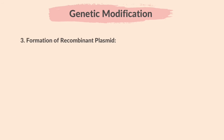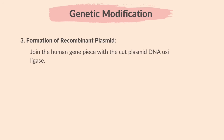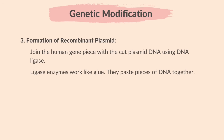Formation of recombinant plasmid. Join the human gene piece with the cut plasmid DNA using DNA ligase. Ligase enzymes work like glue — they paste the pieces of DNA together. This creates a recombinant plasmid.